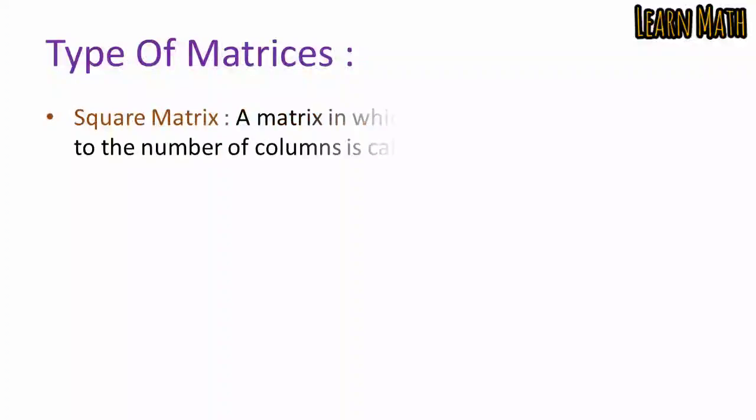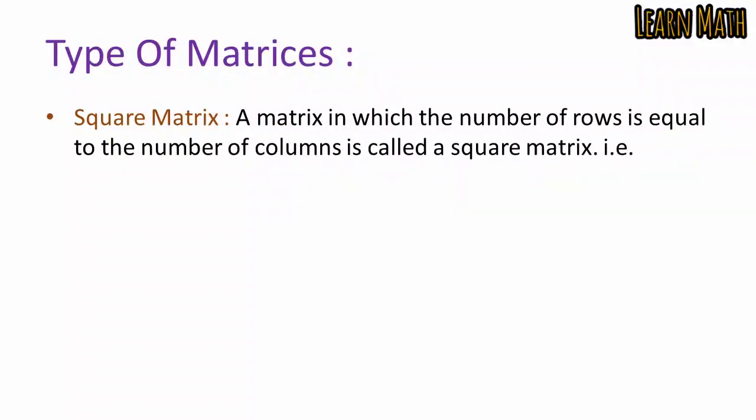A square matrix is one in which the number of rows equals the number of columns. For example, the matrix [1, -1, 2; 3, 1, 4; 5, 0, 6] has order 3×3, where the number of rows and columns are both equal to 3. Similarly, [1, 2; -1, 4] is a 2×2 square matrix.